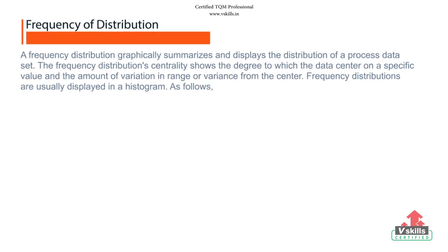A frequency distribution graphically summarizes and displays the distribution of a process dataset. The frequency distribution's centrality shows the degree to which the data center on a specific value and the amount of variation in range or variance from the center. Frequency distributions are usually displayed in a histogram. In simple terms, frequency distribution is a mathematical function showing the number of instances in which a variable takes each of its possible values.